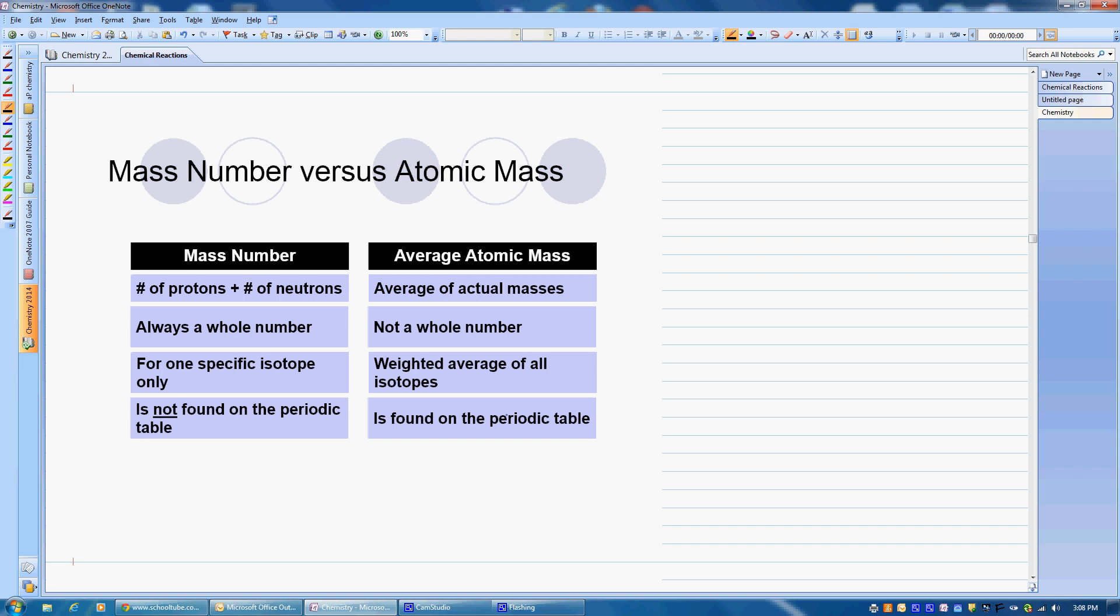What's the difference between mass number and atomic number? Mass number is going to be the protons plus the neutrons. It's always going to be a whole number. It's specific for only one isotope. And it's not going to be on the periodic table.